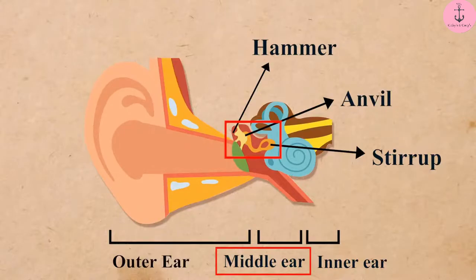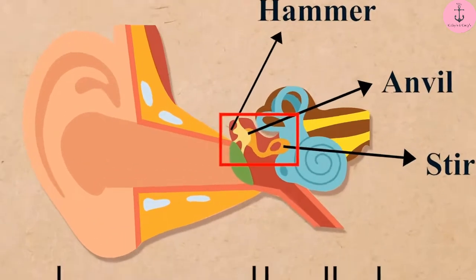Then, the three bones, the hammer, the anvil, and the stirrup of the middle ear amplify the vibrations.